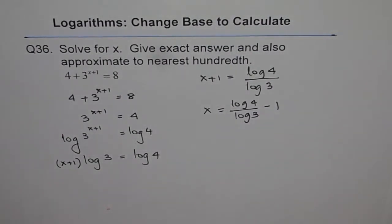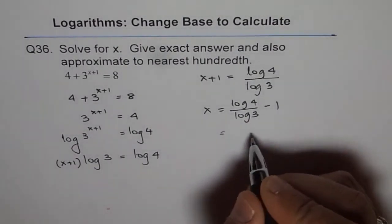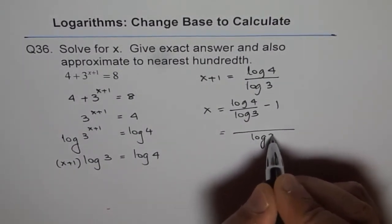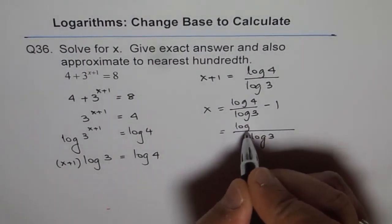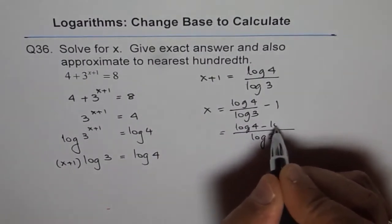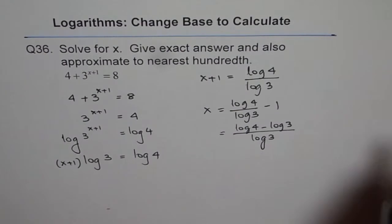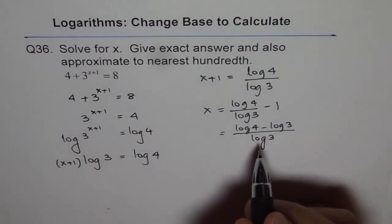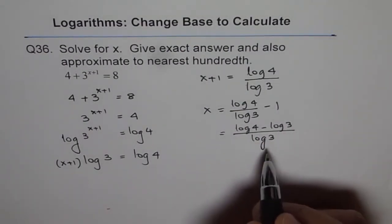You can write it like this or you could take common denominator and write it like this. You can say log of 3 in the common denominator and say log of 4 minus log of 3 either case. So that is the exact answer when you write in terms of log.